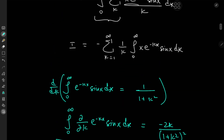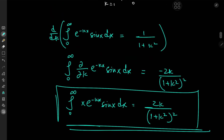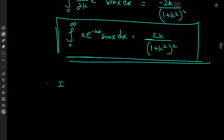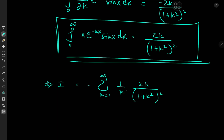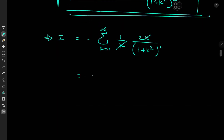So our integration problem is now completely a summation problem. I equals the negative of the sum over k from 1 to infinity of 1 over k times 2k divided by (1 plus k squared) squared. The k's cancel out, meaning we're interested in evaluating negative 2 times the sum over k from 1 to infinity of 1 over (1 plus k squared) squared.